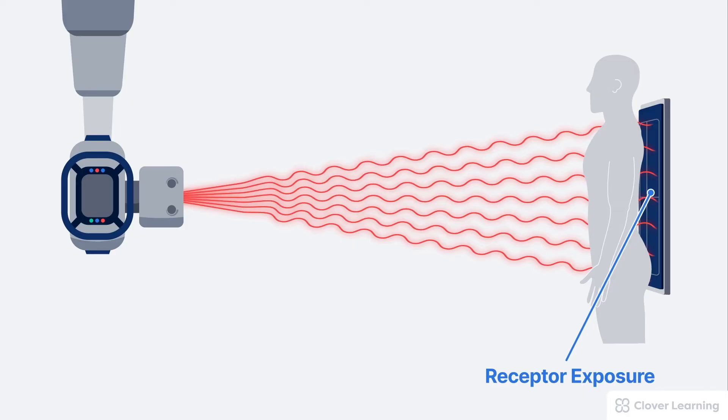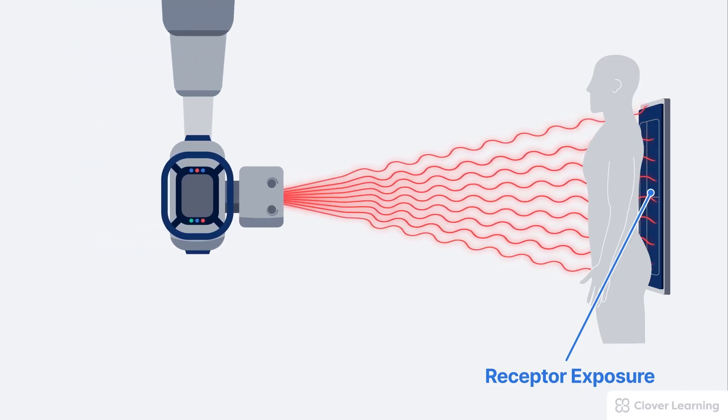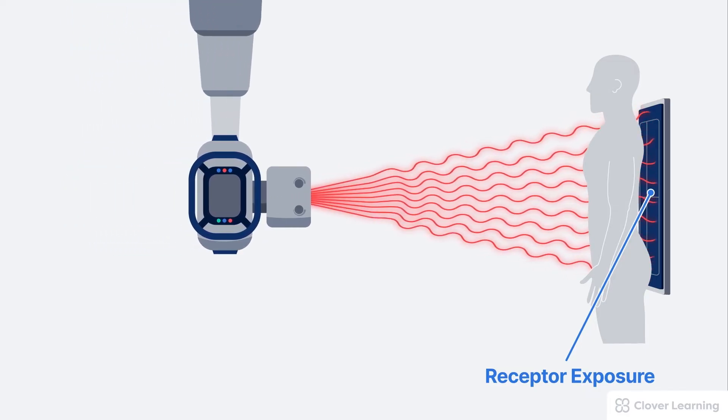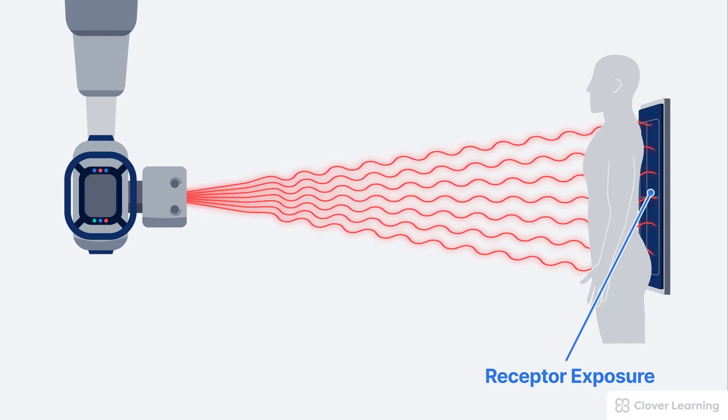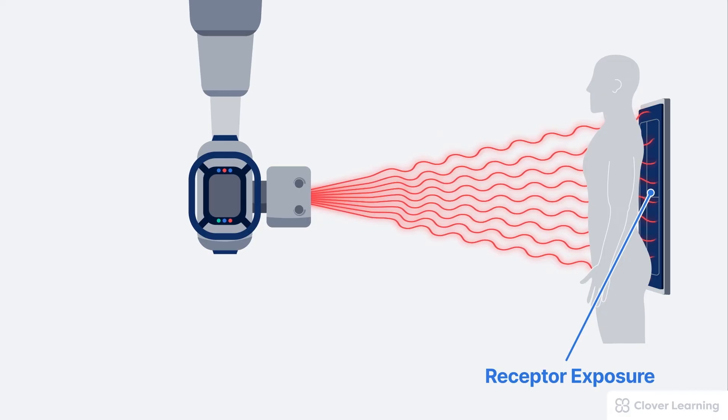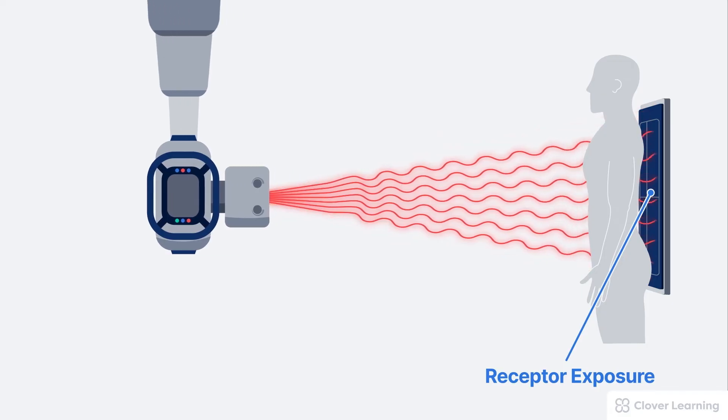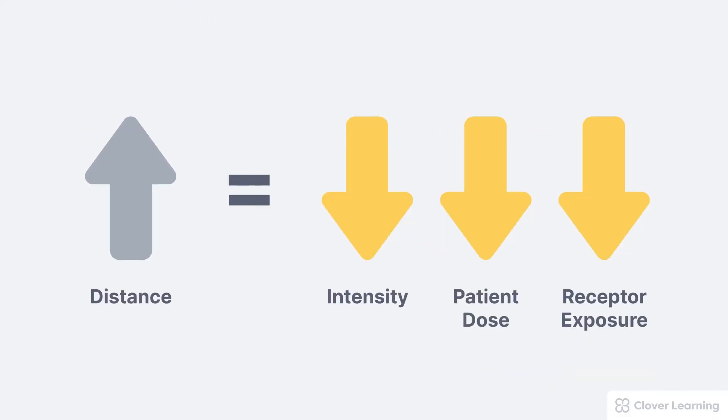You should know that all of this is assuming we're using a fixed technique, not automatic exposure control. So all of these relationships follow the inverse square law. If we increase the distance, the beam intensity at the patient decreases, the patient dose decreases, and the receptor exposure decreases.